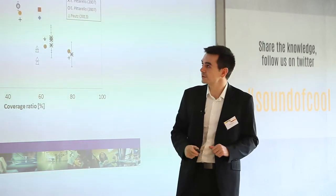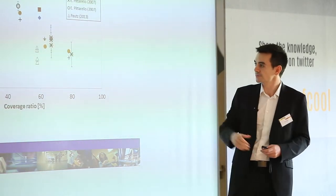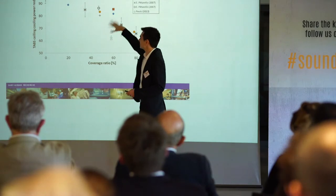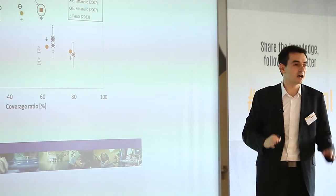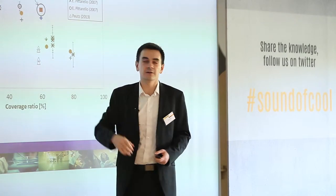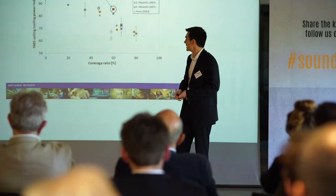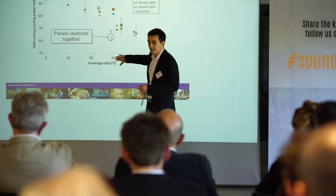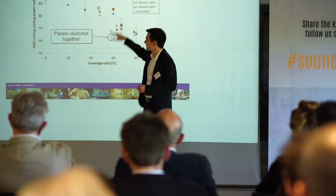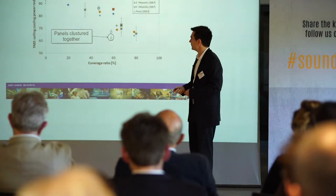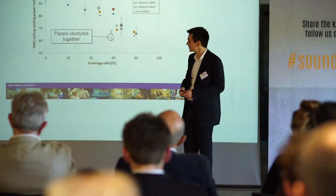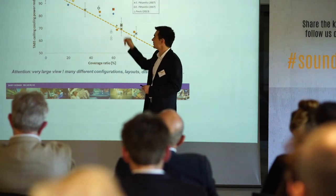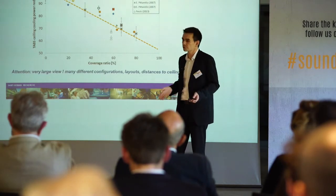On this graph, I put all the data I've read in the papers. We have a lot of points — very interesting. When we look at this, we can make some observations. First, around the value of 60 percent, there is a large spread of values. That's because I plotted all the data I found. For example, in some cases we have panels which are very far from the ceiling — around 80 centimeters — while in other points we have panels clustered together in the center of the ceiling and close to the ceiling. So for the same ceiling coverage ratio, we have two very different effects. If we try to make a linear relation between the two, we obtain a correlation coefficient of 0.87 — not so good, but not so bad either.